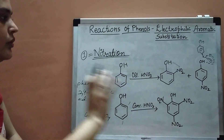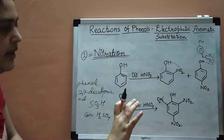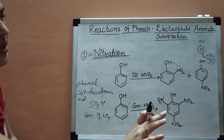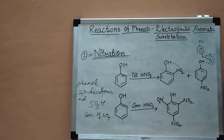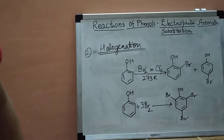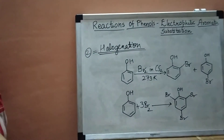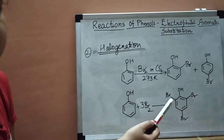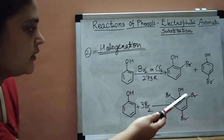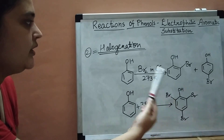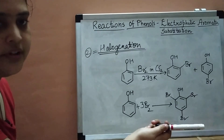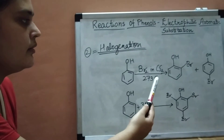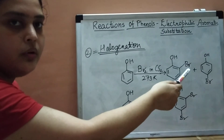That was about nitration as an electrophilic aromatic substitution reaction of phenol. Now we will see the halogenation reaction. Halogenation is also an electrophilic aromatic substitution reaction. We can do halogenation of phenol in several ways; two of those ways are discussed here.